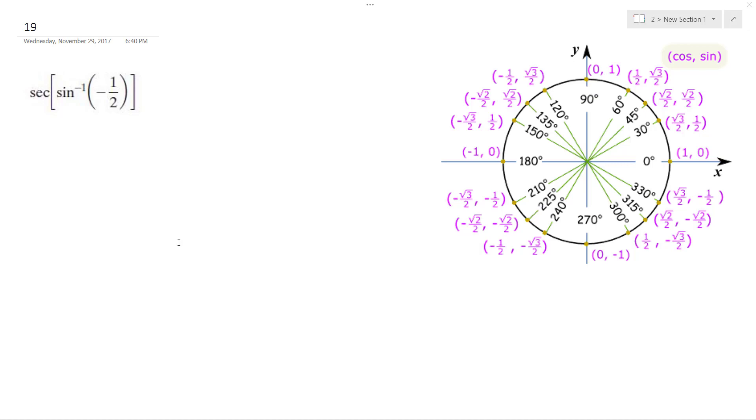All right, so we want to find the secant of the inverse sine of negative one-half. First thing, inverse sine's bound between negative pi over two and pi over two. So negative one-half is down here in quadrant two.